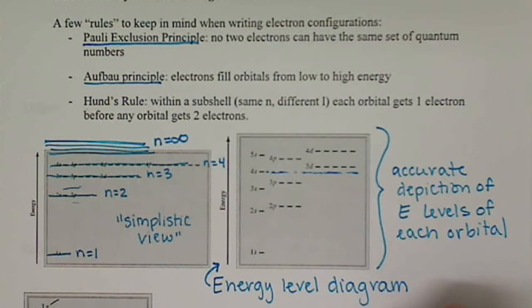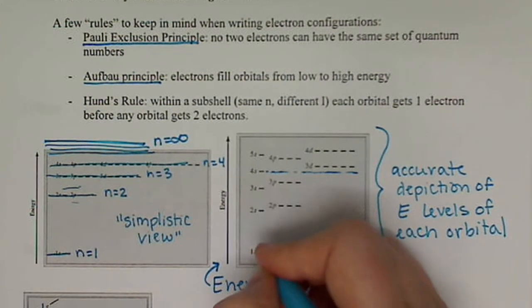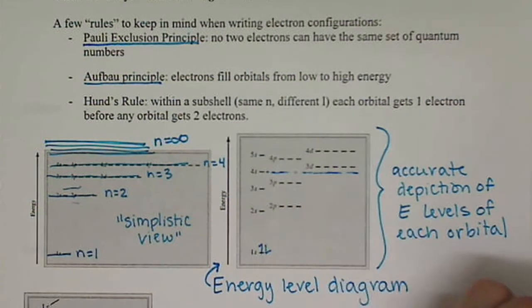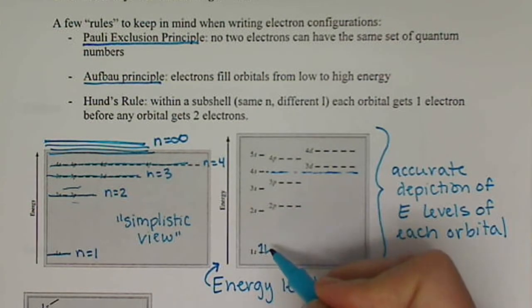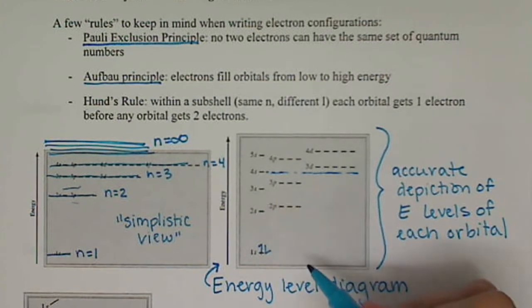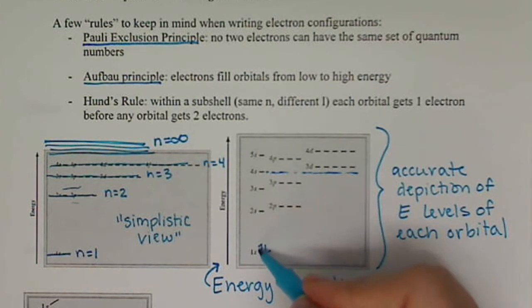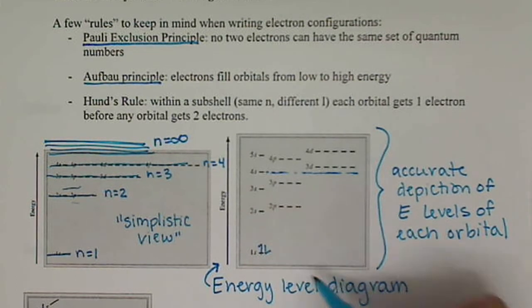So remember we have electrons, we have spin up and spin down. So when we draw these out, we're going to do spin up and spin down, and each line can have an up arrow and a down arrow. So each orbital can house two electrons, and they're going to have an up arrow and a bottom arrow.